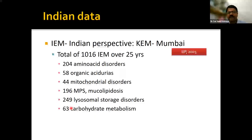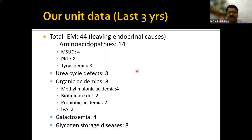Looking at Indian data, one of the largest series from KEM Hospital published data over almost 25 years covering more than a thousand inborn errors. This included 204 amino acid disorders and 58 organic acidemias. In our own unit over the last three years, we had around 44 inborn errors — including 14 amino acidopathies, 4 MSUD cases, 8 urea cycle defects, 8 organic acidemias, and 4 galactosemia cases.